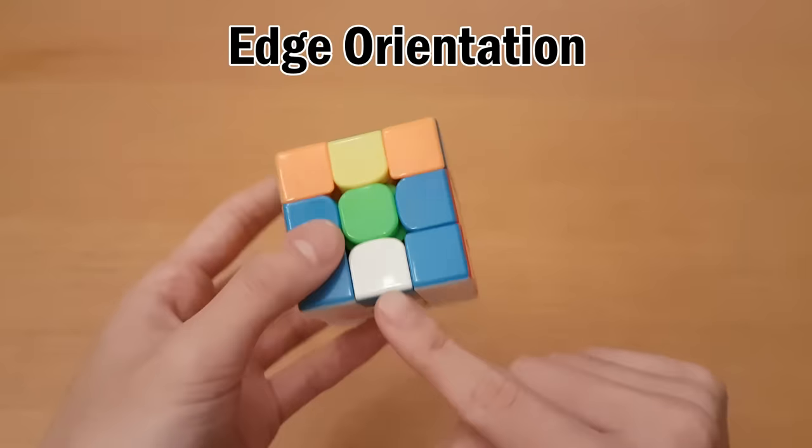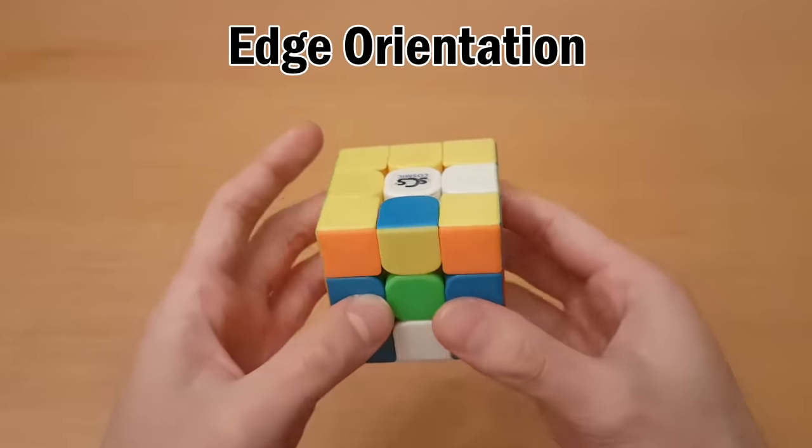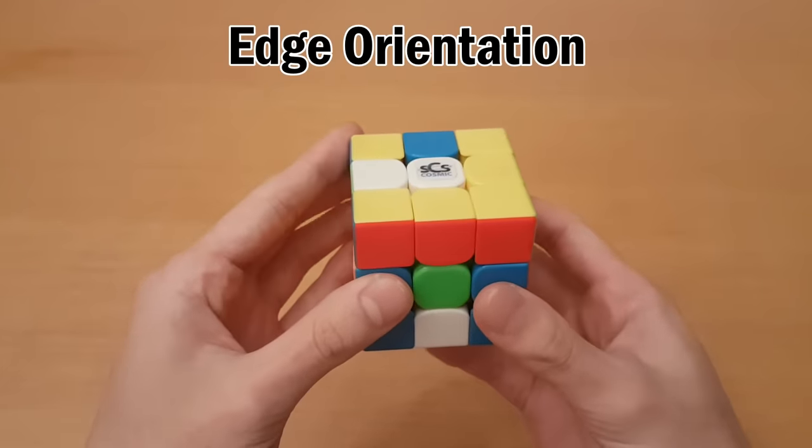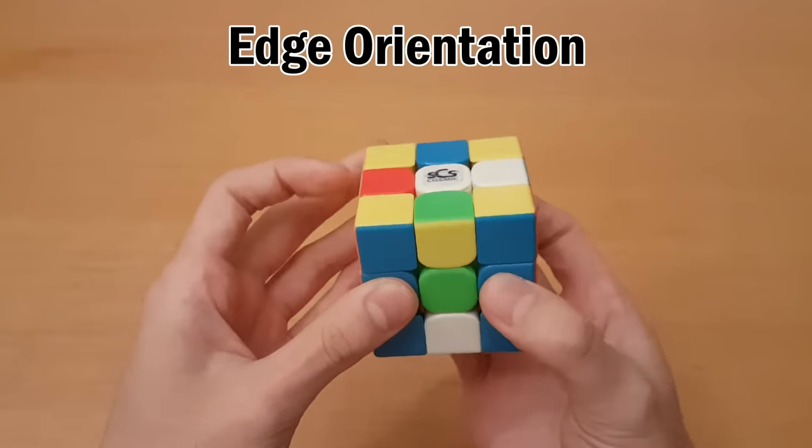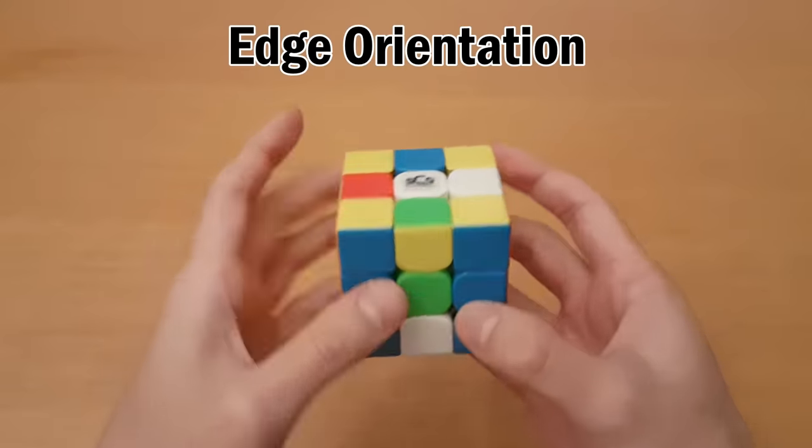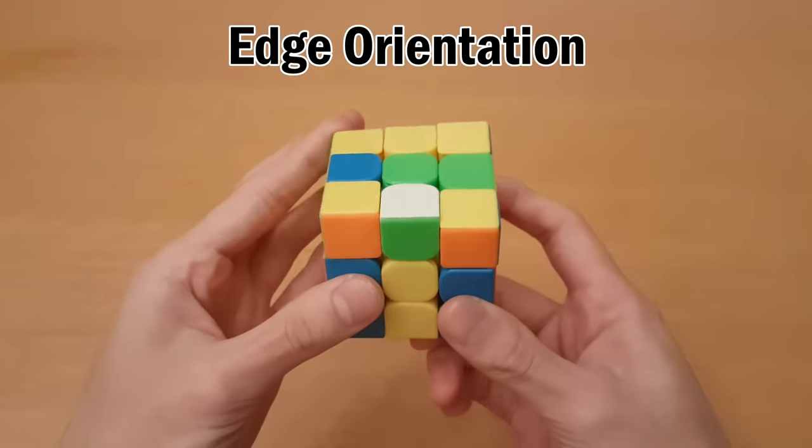So now we have this unoriented edge and this unoriented edge. So what we can do is go like this and do M' U' M. That sets up three bad in the top and one bad at the bottom. Then just do it like this.